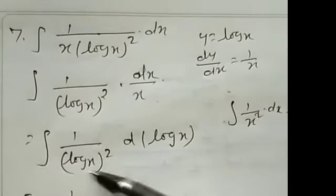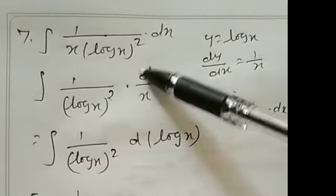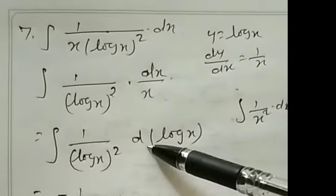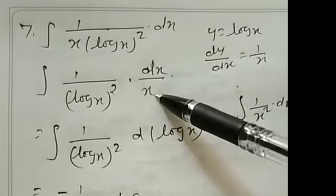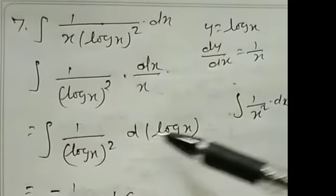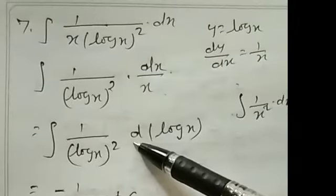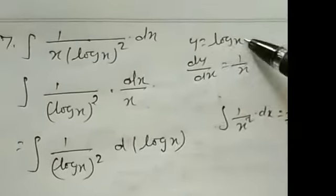integration of 1 divided by log x whole square. Here, differentiation of 1 by x. How to write then? So, 1 by x into log x, that is log x. So, here dx by x into the, we can write differentiation of log x. That we know. So, listen here.